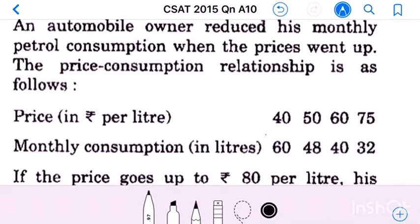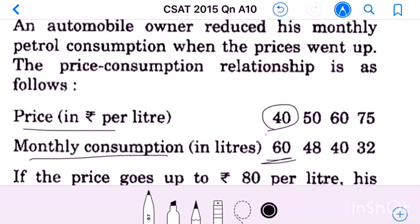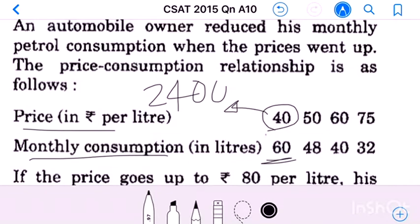First we find the relationship between price per liter and monthly consumption. When price is 40 rupees, monthly consumption is 60 liters, so total expenditure equals 60 into 40, which is 2400. In the second month, price increased to 50 and consumption reduced to 48; multiplying 48 into 50 we again get 2400.